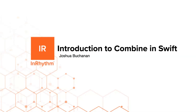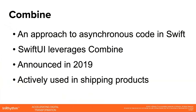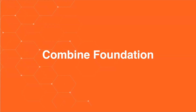Thank you. So today we're going to be talking about Combine in Swift. It's a big topic. There's a lot to take in about Combine, so we're going to take it a little bit at a time. So what is Combine? Combine is Apple's approach to asynchronous code in Swift. SwiftUI leverages Combine behind the scenes. Combine was announced at WWDC in 2019, and it is actively being used in products that are shipping every day.